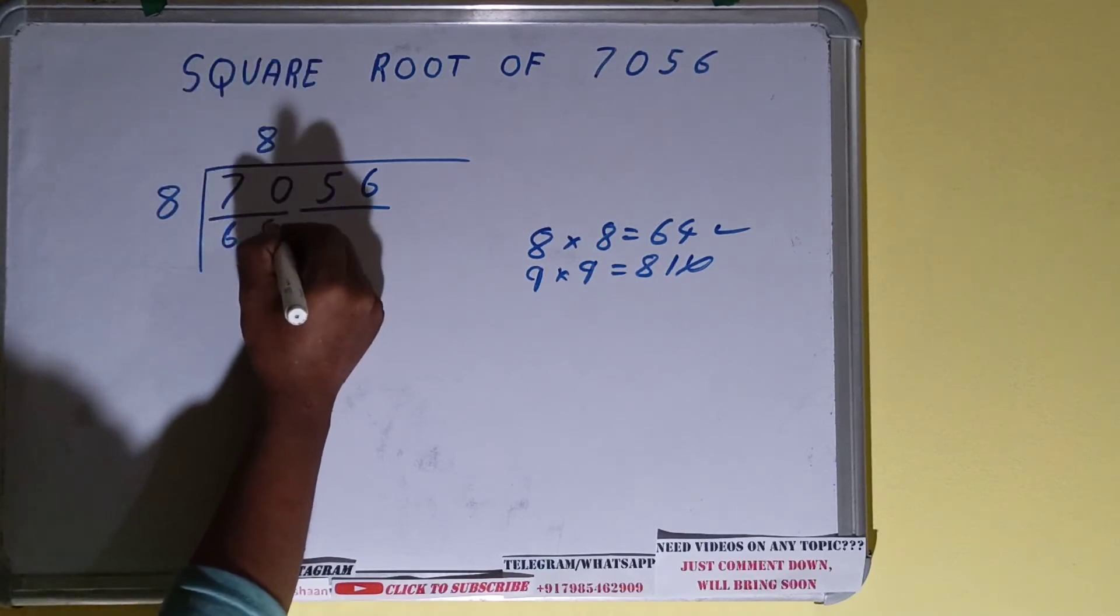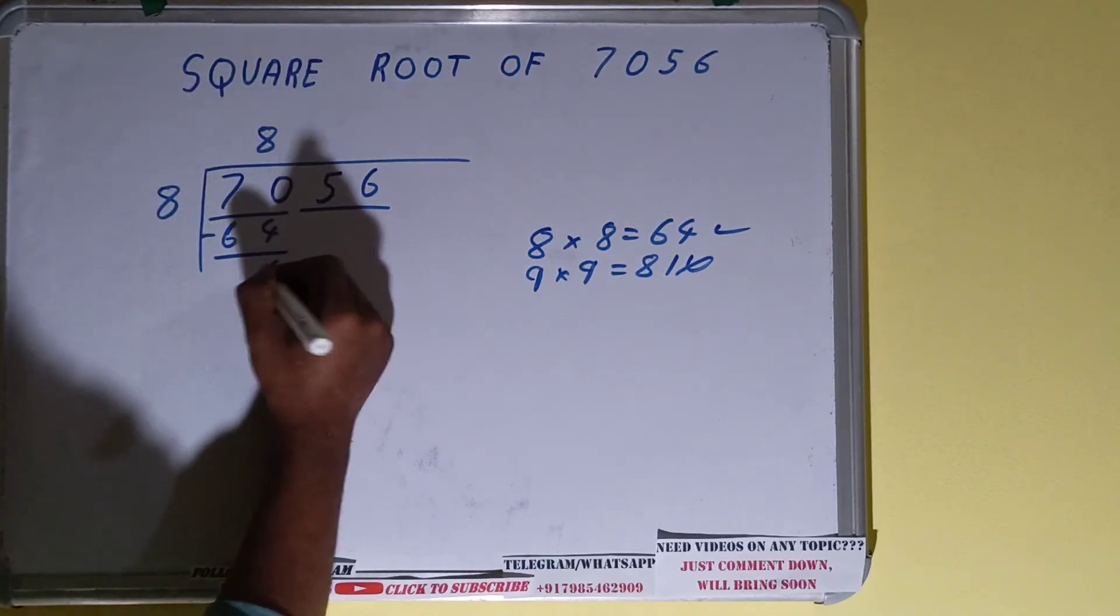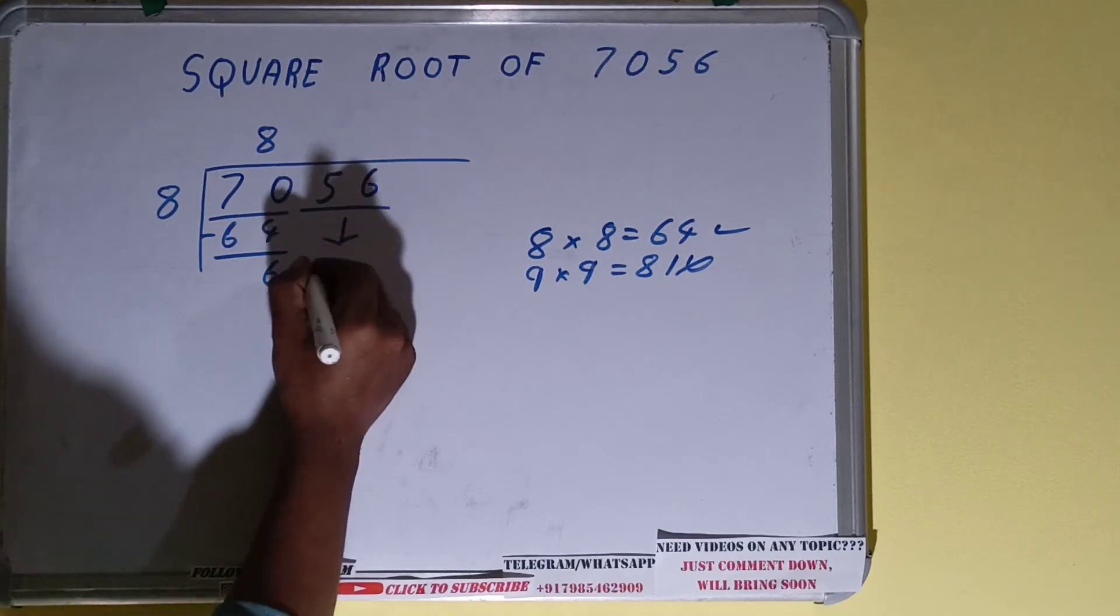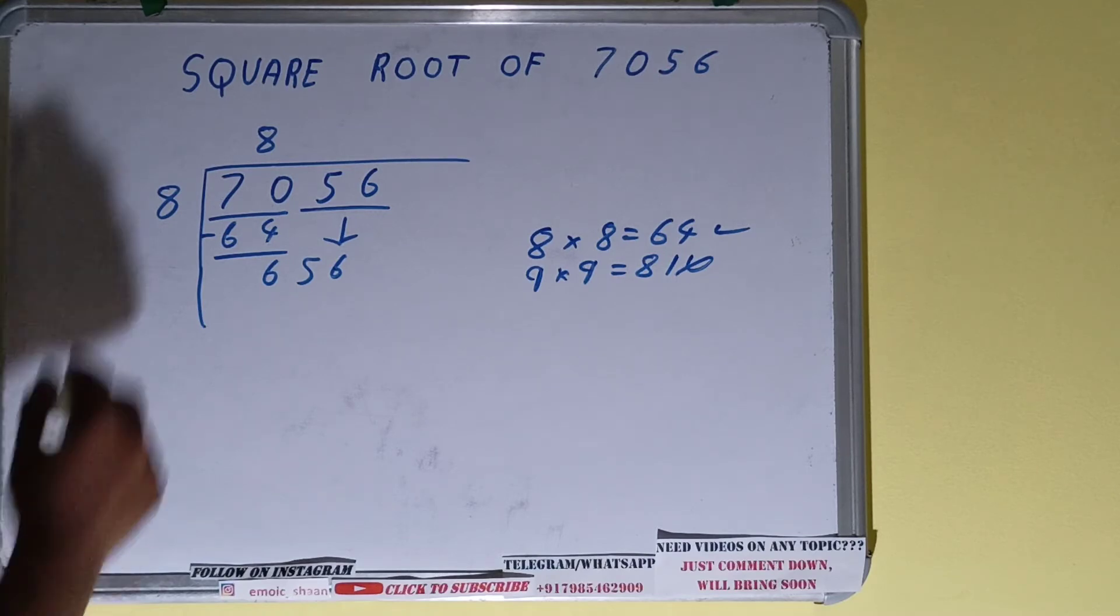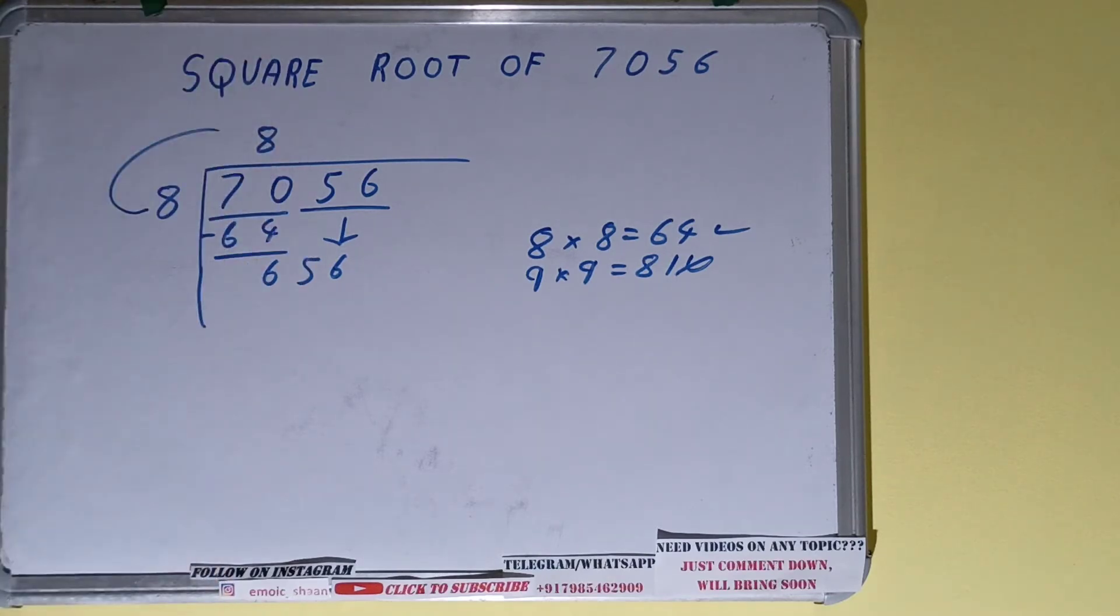64, subtract it. You will be left with 6. Bring the next pair down. It will be 656. Okay, now whatever is your divisor, add it with what you multiplied with. You did 8 into 8, right?